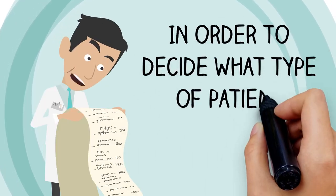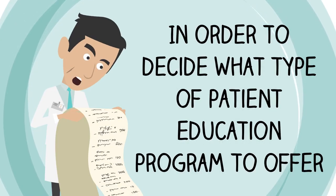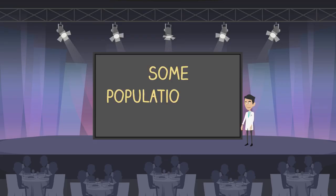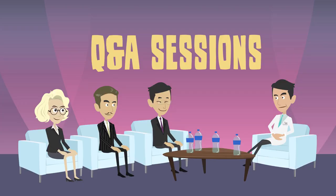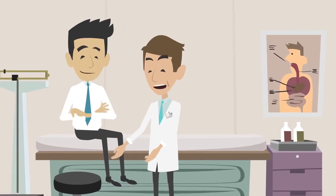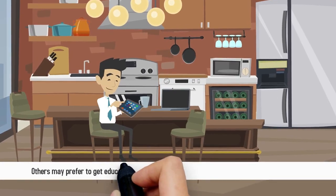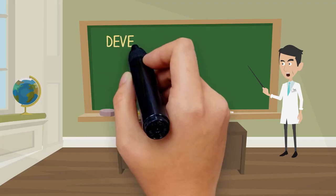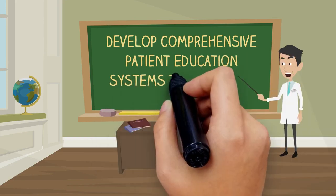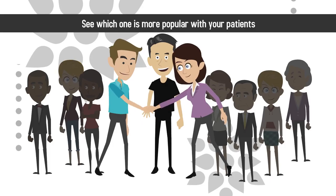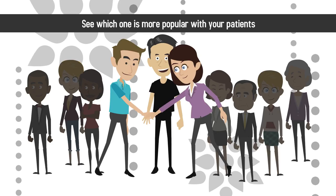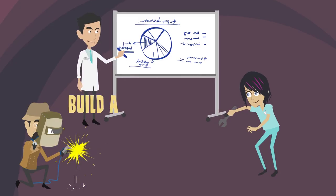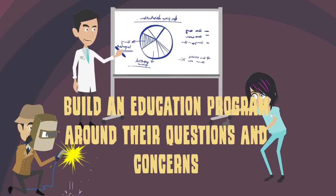In order to decide what type of patient education program to offer, find out how your patients prefer to absorb information. Some populations may want live events, Q&A sessions, and one-on-one time with medical staff. Others may prefer to get educated on their own terms by reading your blog or email newsletter. Develop comprehensive patient education systems that address both learning styles, and see which one is more popular. From there, you can focus on what patients want most and build an education program around their questions and concerns.